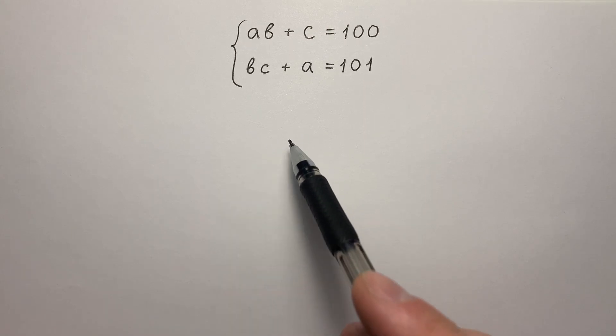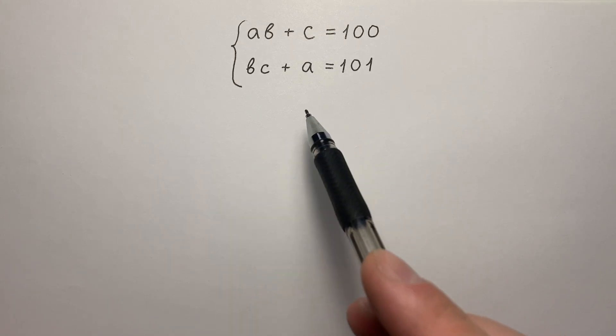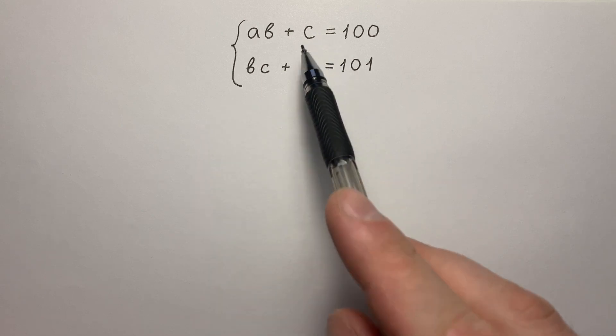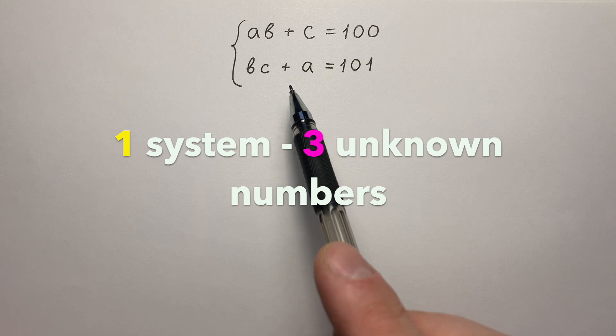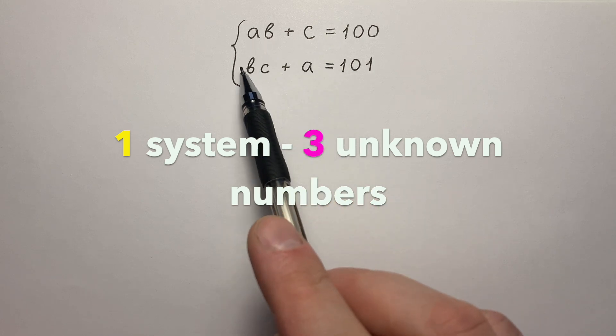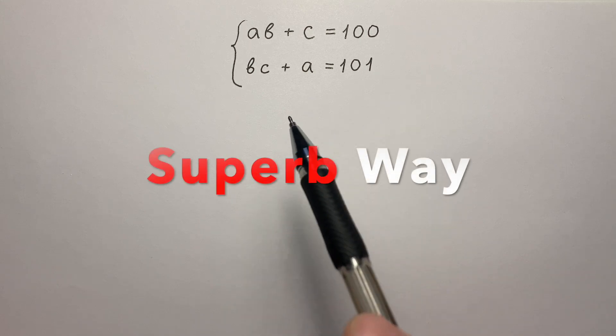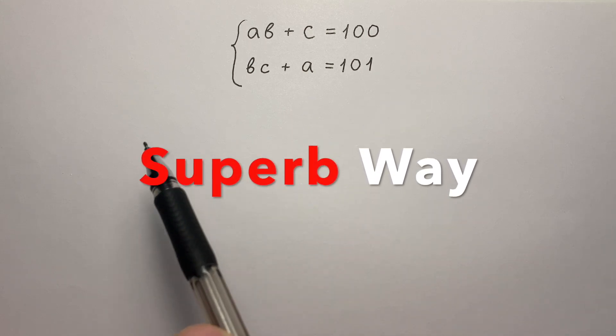Everybody knows how to solve system of equations with two variables. But what if I have another one? How about that? One system of equations, three unknown numbers. It seems impossible, but there is a superb way to solve this in a moment.